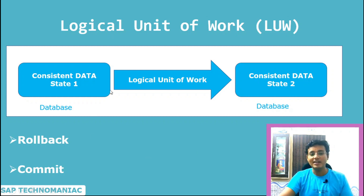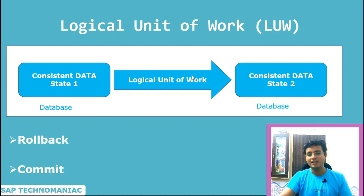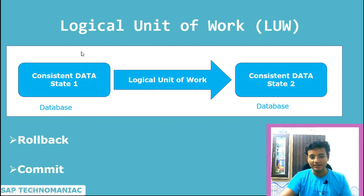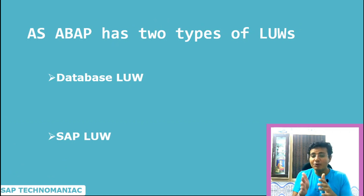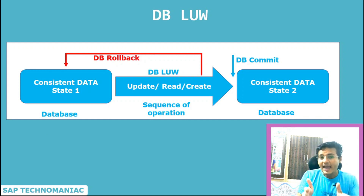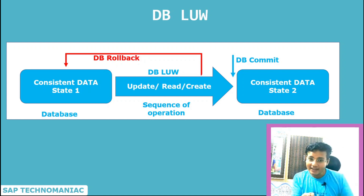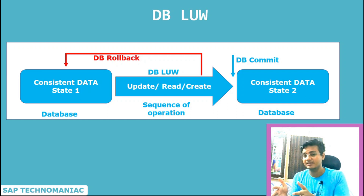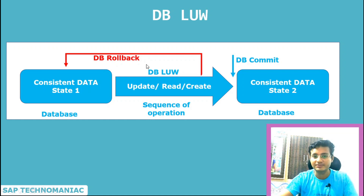So that is the reason the time interval between two consistent states of the database is called the logical unit of work. In this we have the flexibility to return operations if something goes wrong. In SAP we have two types of LUW — one is the database LUW and second is the SAP LUW. A database LUW is a sequence of operations — which can be update, read, or create — ending with a database commit.